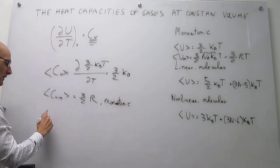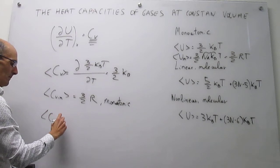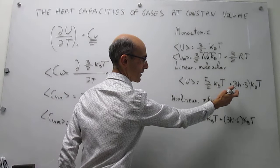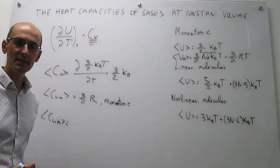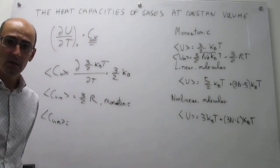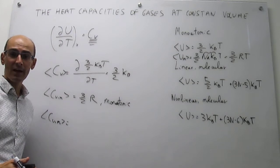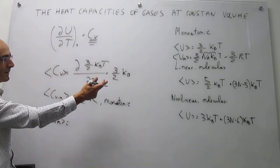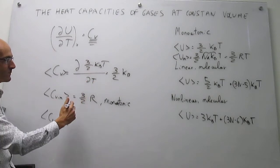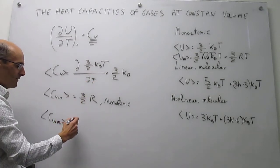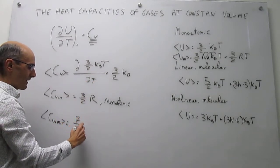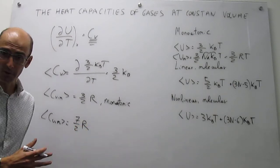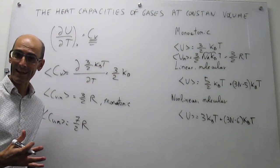For a diatomic molecule you will have (5/2)k_BT plus k_BT, giving (7/2)k_BT per particle, or (7/2)RT per mole. Taking the first derivative of that internal energy with respect to temperature gives (7/2)R as the heat capacity at constant volume per mole for a diatomic molecule.